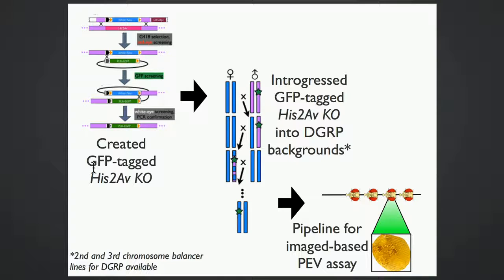In summary, we created a GFP-tagged His2AV knockout, introgressed it into about 150 DGRP lines, and are currently tweaking the pipeline for image-based analysis of position effect variegation. We're happy to share any of these knockouts with anyone interested, and we also have corresponding second and third chromosome balancer lines for most of the DGRP lines, which we will also be happy to share.